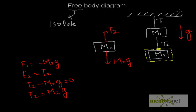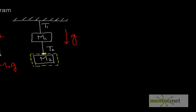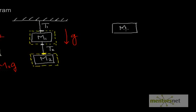Now let us isolate M1 in a similar fashion. We draw a boundary around M1 with the yellow marker and cut any connections passing through this boundary — one cut above M1 and one cut below. We draw M1 separately. The forces acting on M1 are: gravity M1·G downward, a downward force T2 from the lower cut string, and an upward force T1 from the upper cut string.